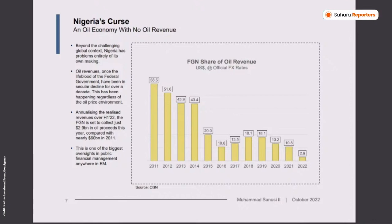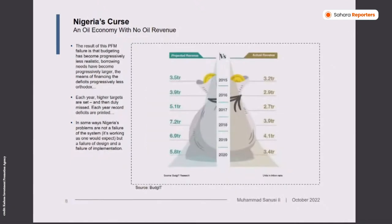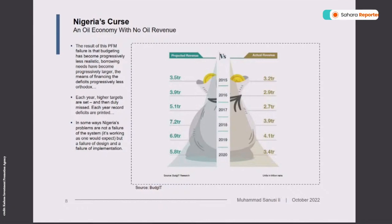Everywhere we budget revenue and everywhere we underperform. In 2015 we projected ₦3.5 trillion and got ₦3.2 trillion. In 2016 — ₦3.9 trillion projected, ₦2.9 trillion actual. In 2017 — ₦5.1 trillion projected, ₦2.7 trillion actual. In 2018 — ₦7.2 trillion projected, ₦3.9 trillion actual. In 2019 — ₦6.9 trillion projected, ₦4.1 trillion actual. In 2020 — ₦5.8 trillion projected, ₦3.4 trillion actual. The gap keeps widening. This year we are projecting ₦9 trillion, and most likely we are going to underperform that figure.